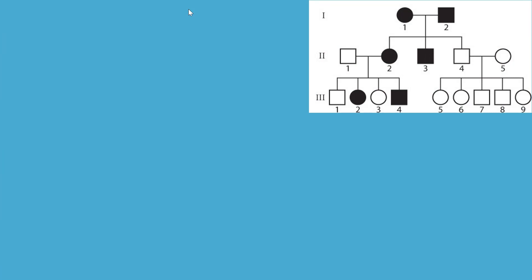We're going to always start, as we do with genetics problems, with our alleles. Big H is dominant — that's Huntington's disease. An individual could be big H, big H, or they could be big H, little h — uncertain just yet. Little h is no disease.